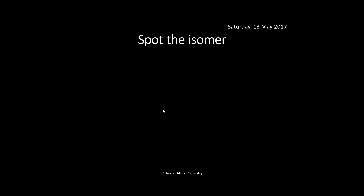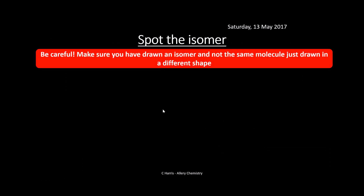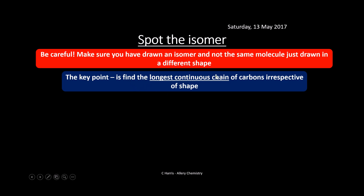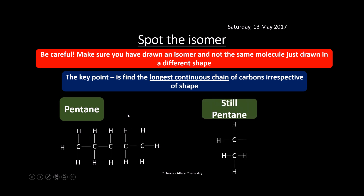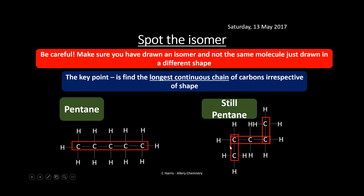You've got to be careful when drawing isomers — make sure you've actually drawn something different and not just a different shape. The key point is to find the longest continuous chain of carbons irrespective of the shape. For example, this is pentane with five carbons and 12 hydrogens. This other drawing still has a longest continuous chain of five — one, two, three, four, five. So even though it looks different, it is actually the same molecule, still pentane.